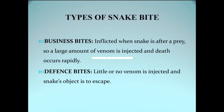The timing of snake bite is important because there are two types: business bite and defense bite. In a business bite the snake is hunting and injects a large amount of venom, causing rapid death. In a defense bite the snake is only trying to escape and injects much less venom. Business bites occur during hunting time — since poisonous snakes are nocturnal, these most commonly occur at night.